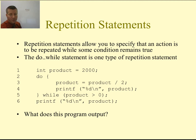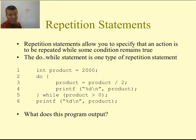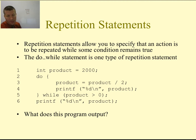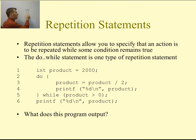Is 500 greater than 0? It is, so we loop back. We divide product by 2, making it 250, and print that. We check if 250 is greater than 0, loop back to line 3, divide by 2 to get 125, and print that. 125 is greater than 0, so we loop back and compute 125 divided by 2. Since we're dealing with integers, it chops the decimal off, and we get 67.